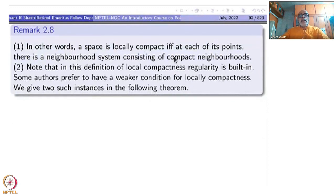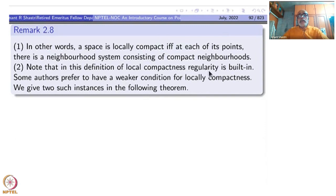I repeat: a space is locally compact if and only if for each of its points, there is a neighborhood system consisting of compact neighborhoods — in fact, compact and closed neighborhoods. Note that in this definition of local compactness, regularity comes automatically.